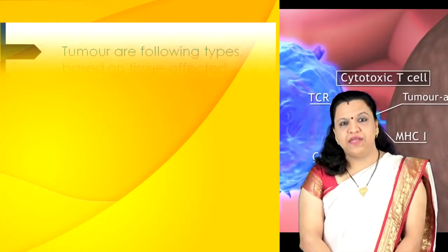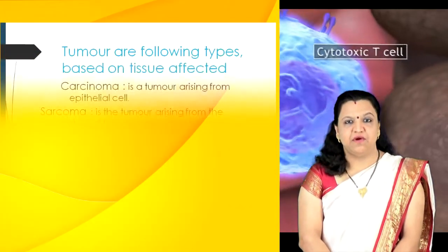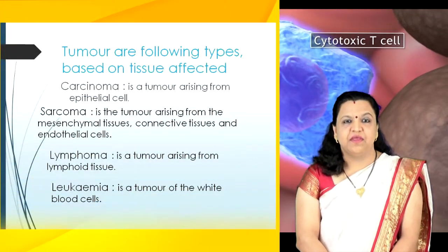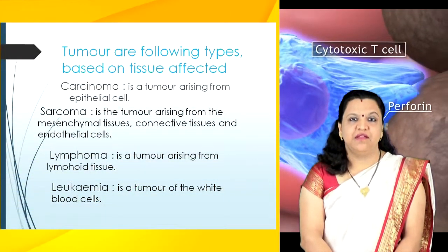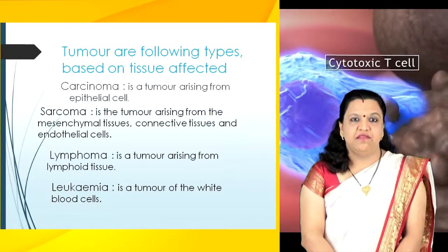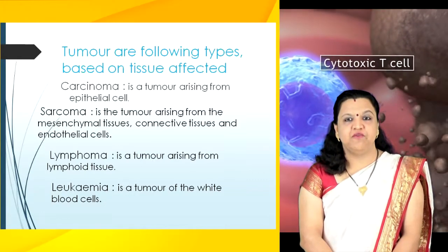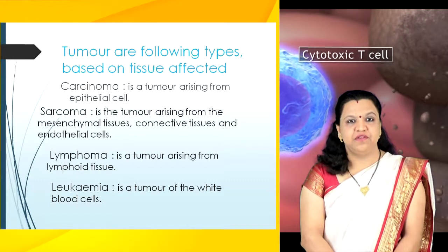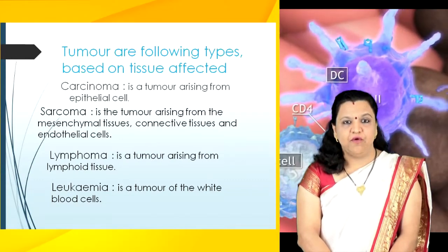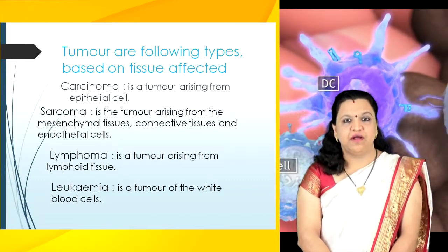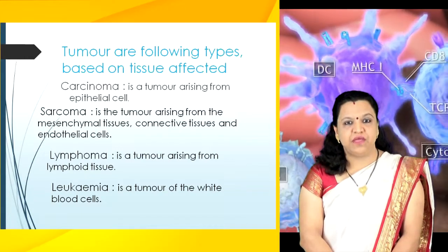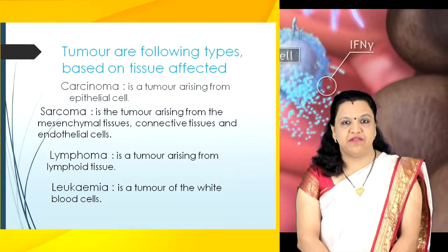Tumors are of the following types based on the types of tissues affected. First is carcinoma — a tumor arising from epithelial cells. Sarcoma is a tumor arising from mesenchymal tissues, connective tissues, and endothelial cells. Lymphoma is a tumor arising from lymphoid tissues, whereas leukemia is a tumor of the white blood cells.